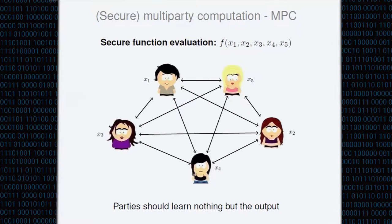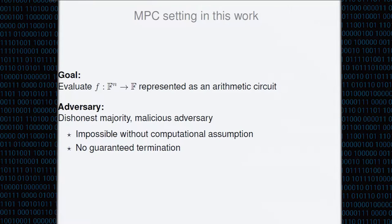We want correctness, so if we have a result we want that result to be correct, and we want privacy — informally meaning that the parties should learn essentially nothing but the output. When we consider an MPC protocol we may have many different settings, and to properly describe an MPC task we need to specify the functionality: informally we want to evaluate function f represented as an arithmetic circuit.